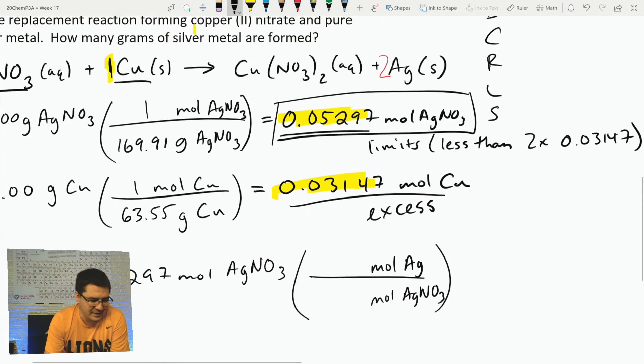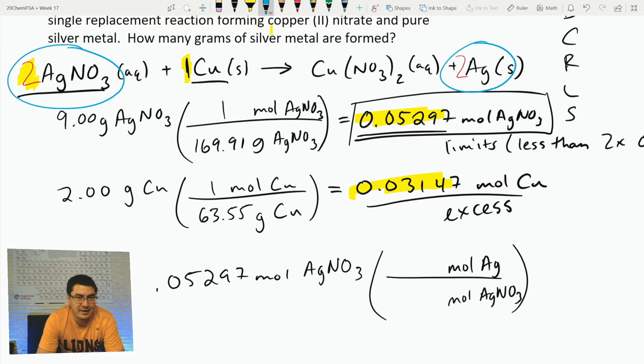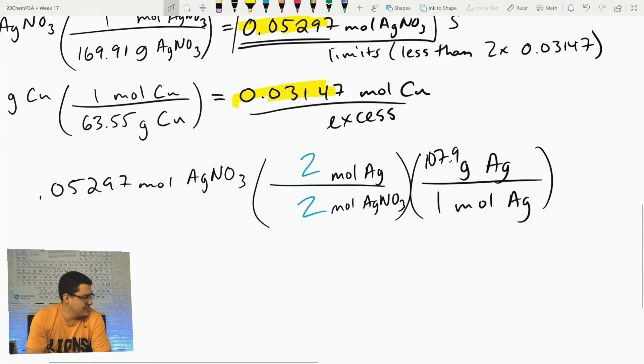Where do I get that ratio? I look: here's silver nitrate and here's silver, and the ratio there is 2 to 2, or just 1 to 1. Then we're going to take one mole of silver and convert it to grams of silver, and that's 107.9. So I would type this in as 0.05297 times 2 over 2, which is just multiplying by 1, and then times 107.9.